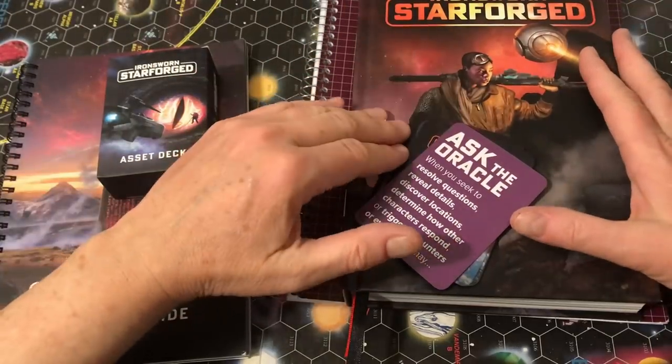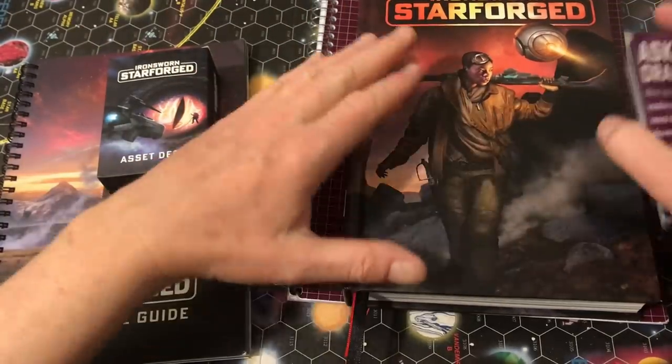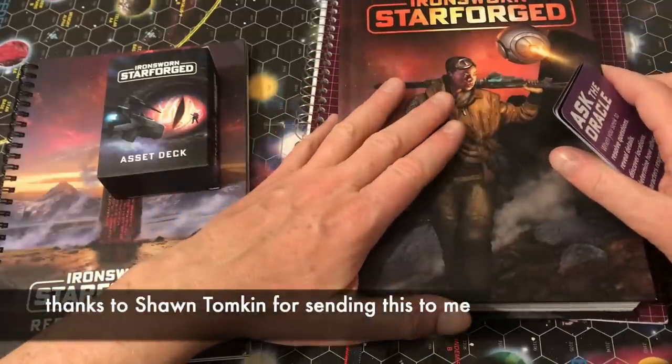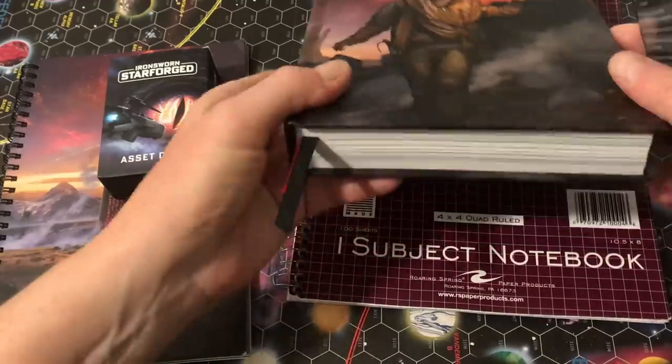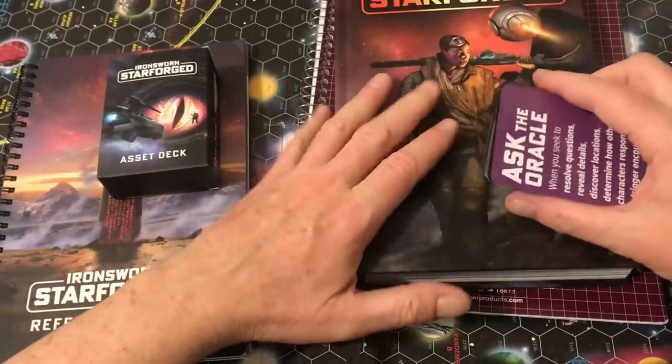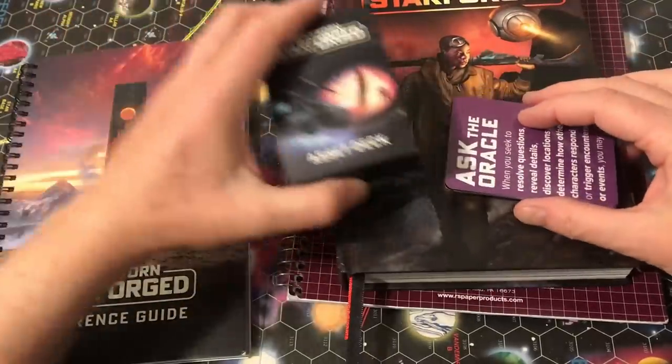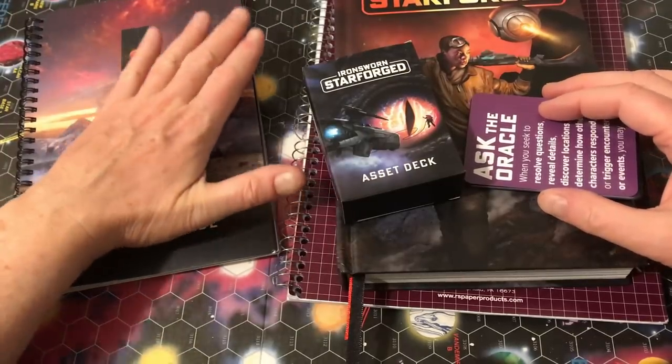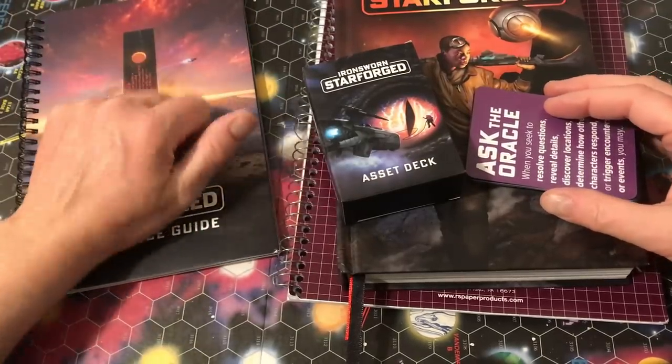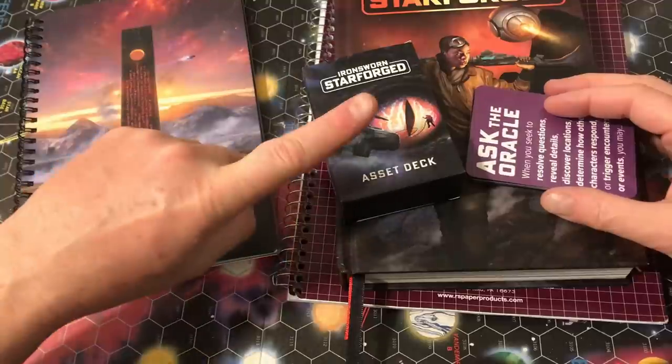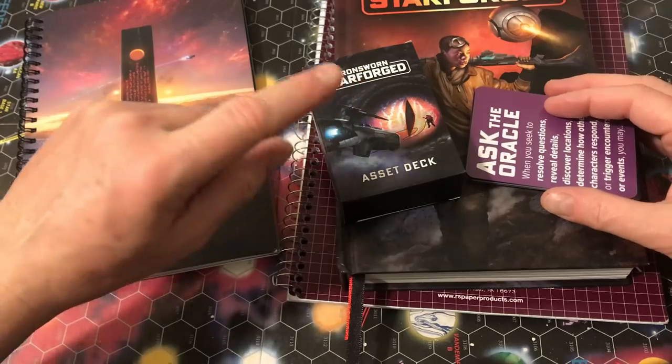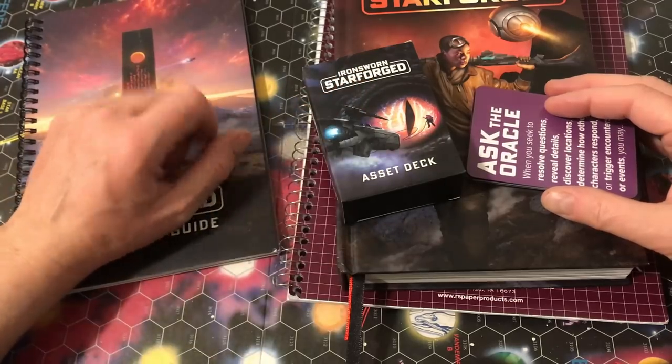Right as I was leaving for vacation for the holidays, I had a package and it was Ironsworn Starforged, the physical version of this game with the asset deck and the reference guide. I did a video on the game, which was a page through of the digital version, and if you're interested, you can see that video up here, and I'll try to remember to put it in the link below as well.